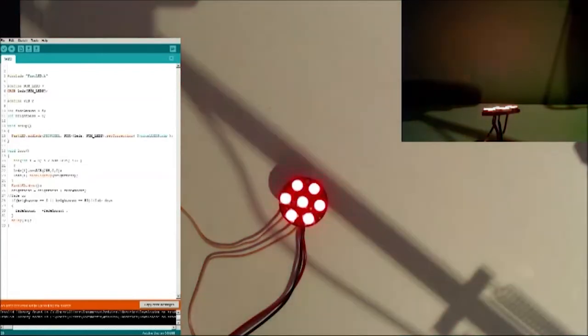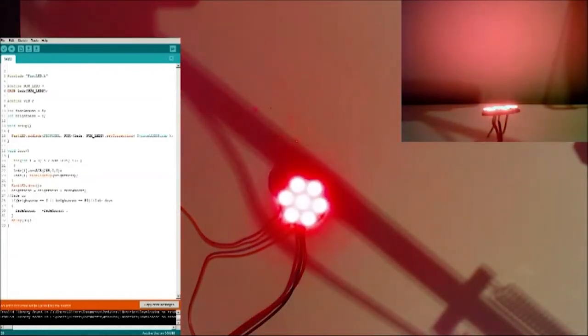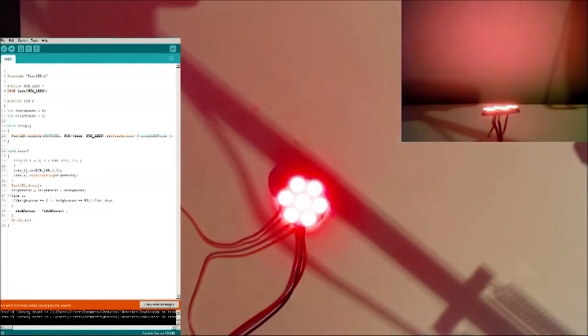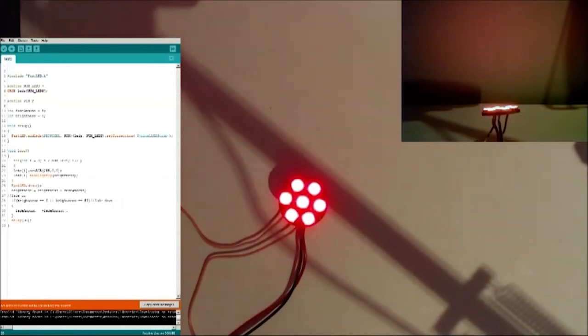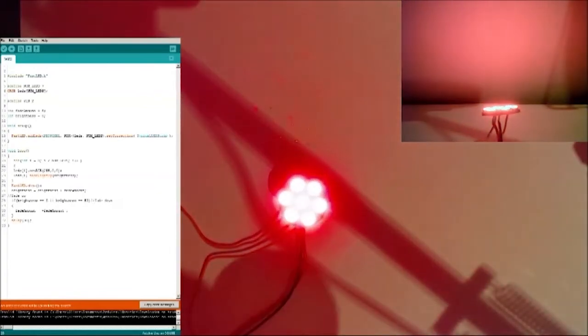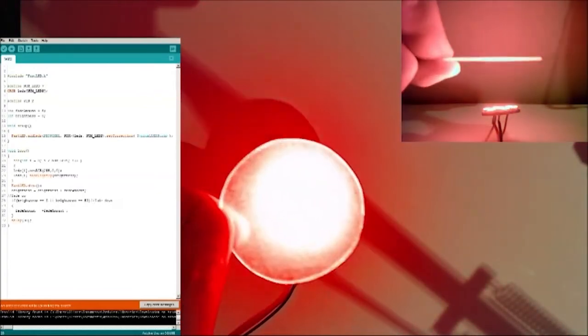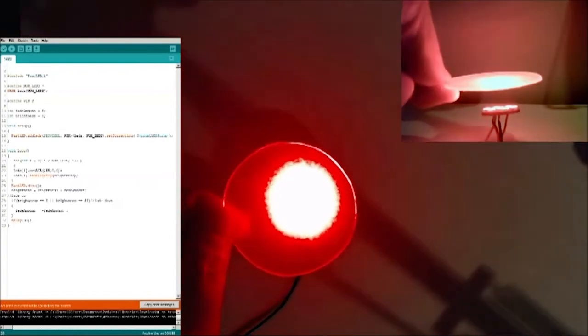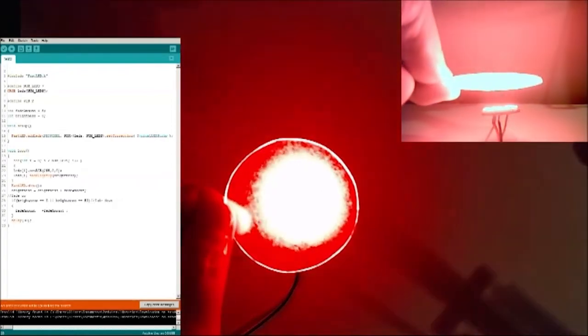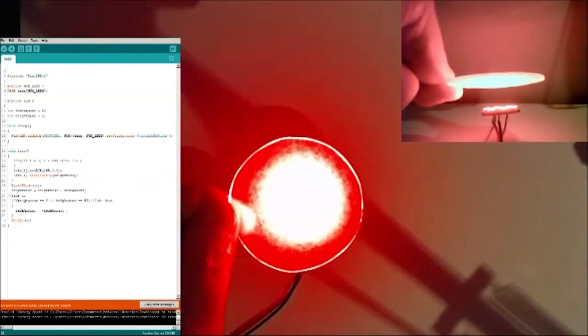Now I'm going to talk about diffusion. Here is the same seven LED NeoPixel ring as I've been using earlier. First of all, I'm going to use a piece of acrylic that I've sanded on one side. And just hold it in front. And you can see as it dulls, you can actually see the individual LEDs through it.